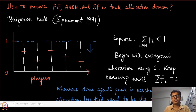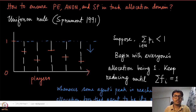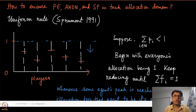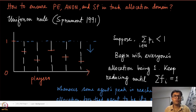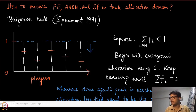In the task allocation domain we were looking for a mechanism which is Pareto efficient, anonymous, and strategy-proof. In this module we are going to give a very interesting mechanism known as the uniform rule. This was proposed by Sprumont way back in 1991.